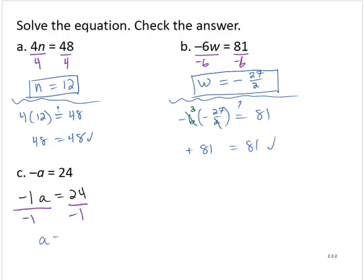This will isolate the a. And 24 divided by negative 1 is negative 24. Let's check our work.